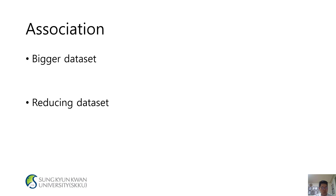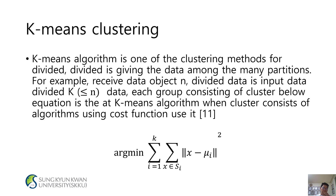Bigger Data and Reducing Data. K-means Clustering: K-means clustering is one of the clustering methods for partitioning. Partitioning means giving the data among many partitions. For example, a received dataset with data objects is divided: input data is divided by k, so each group consists of k clusters.